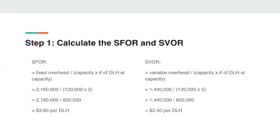Next, calculate the standard variable overhead rate. Everything is the same except now we divide by the variable overhead cost of $1,440,000. That gives us a standard variable overhead rate of $2.40 per direct labor hour.